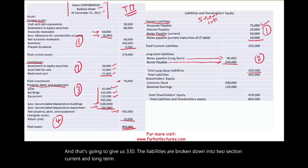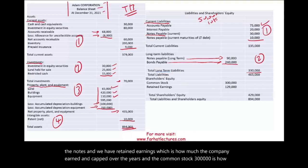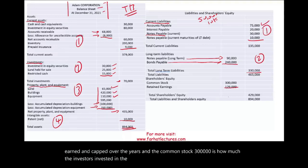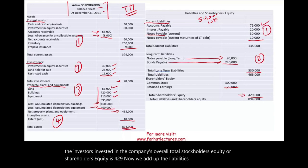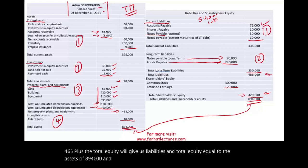Now we have the stockholders' equity. We have common stock of $300,000. Nothing to do except to disclose how many shares are authorized. We can disclose this in the notes. And we have retained earnings, which is how much the company earned and kept over the years. And the common stock, $300,000, is how much the investors invested in the company. Overall, total stockholders' equity or shareholders' equity is $429,000. Now we add up the liabilities, which are $465,000 plus the total equity will give us liabilities and total equity equal to the assets of $894,000. And this is how you prepare a classified balance sheet.